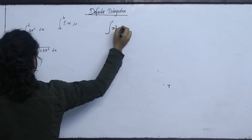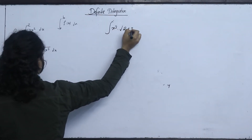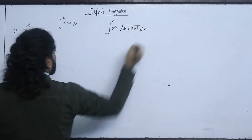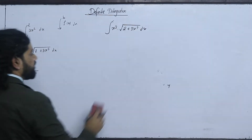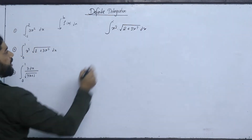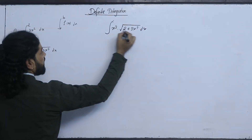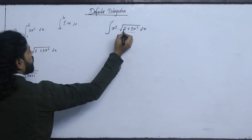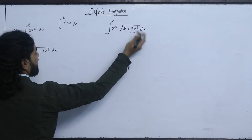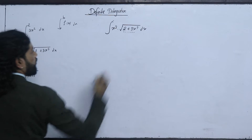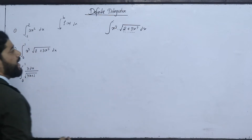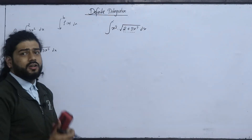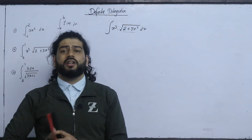The second problem is: integrate x³ times √(2 + 3x⁴) dx. We use integration by substitution. Let the expression 2 plus 3x⁴ be our substitution. The derivative of the constant 0 plus 3x⁴ gives 12x³, and the 2 value substitution involves x³.